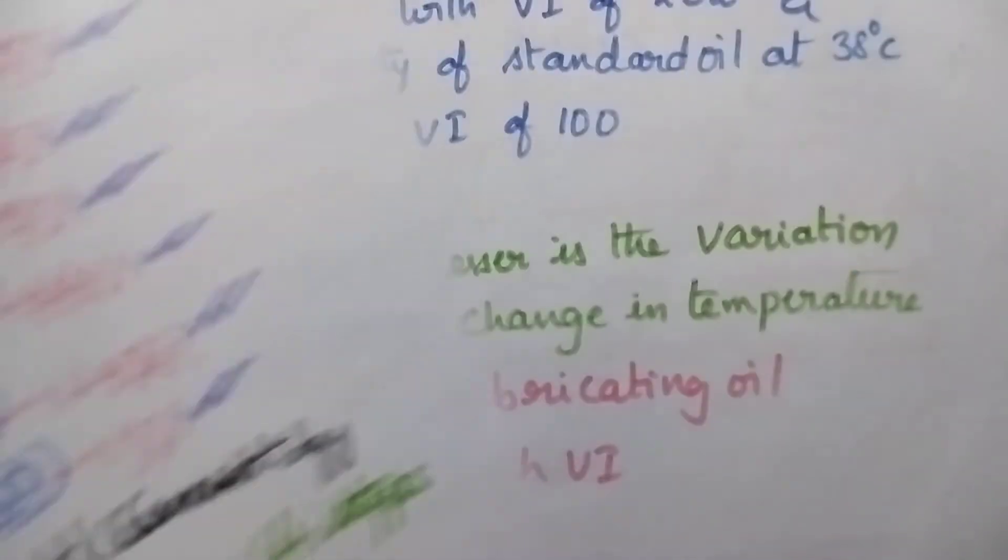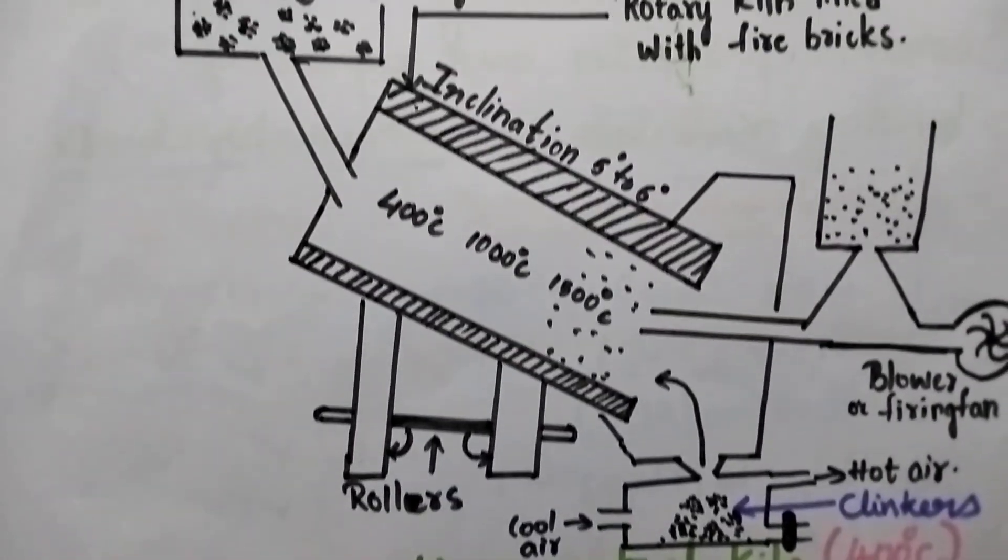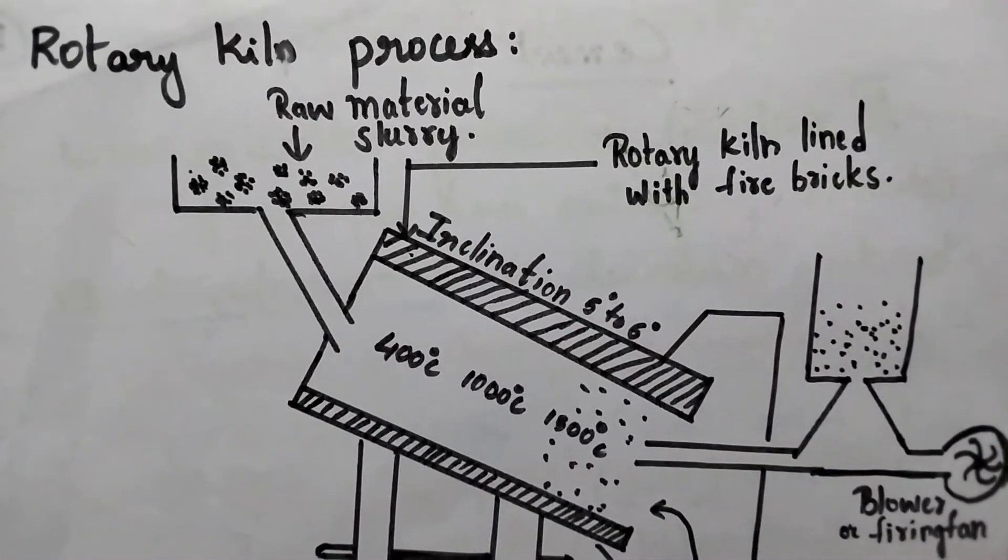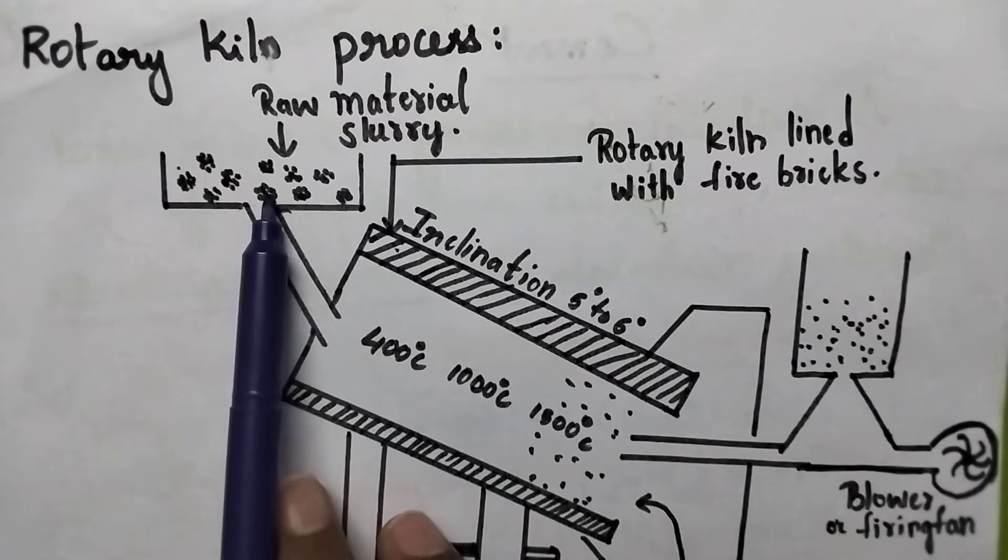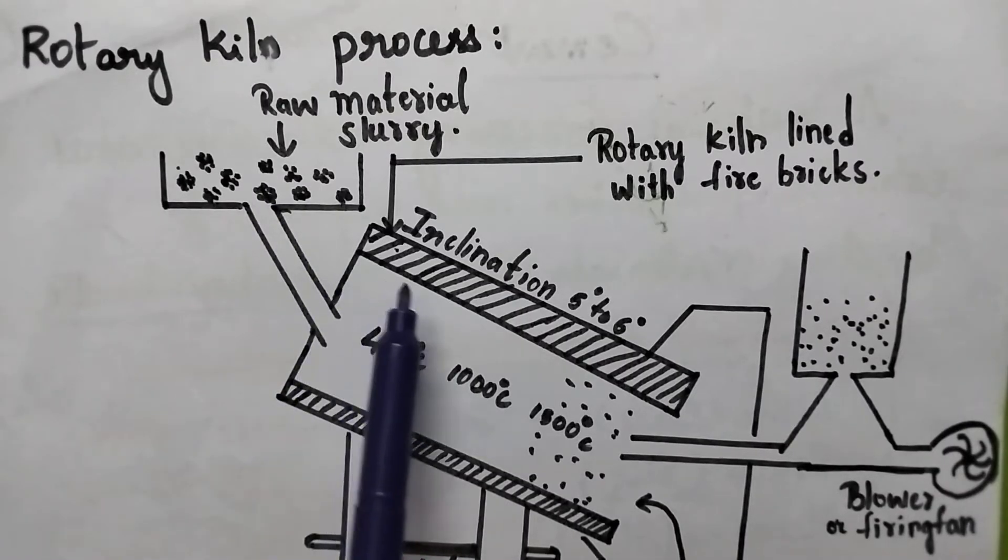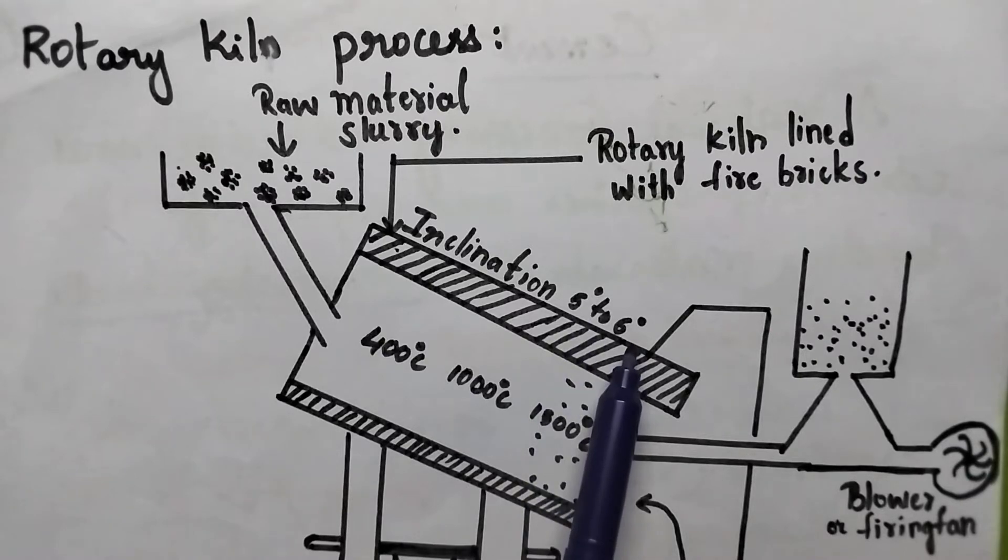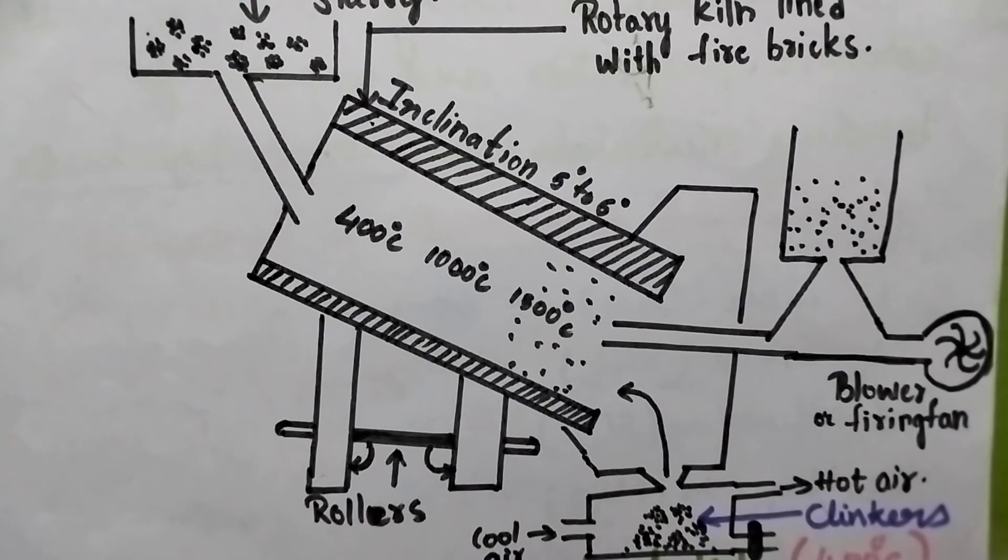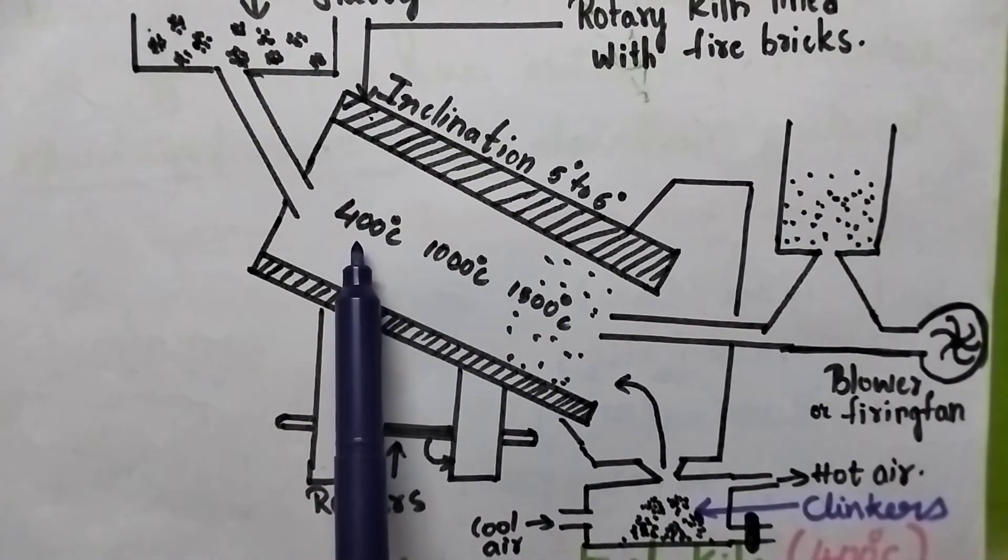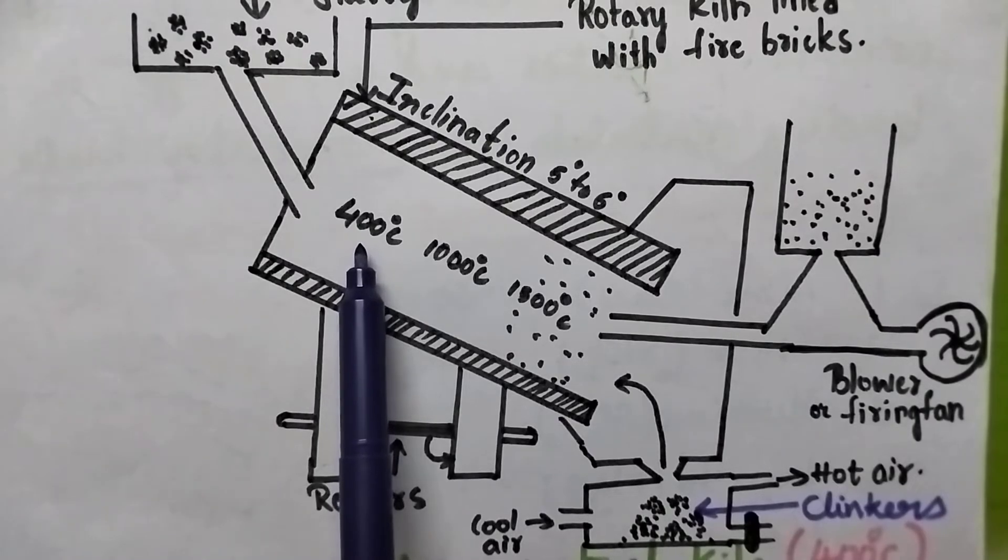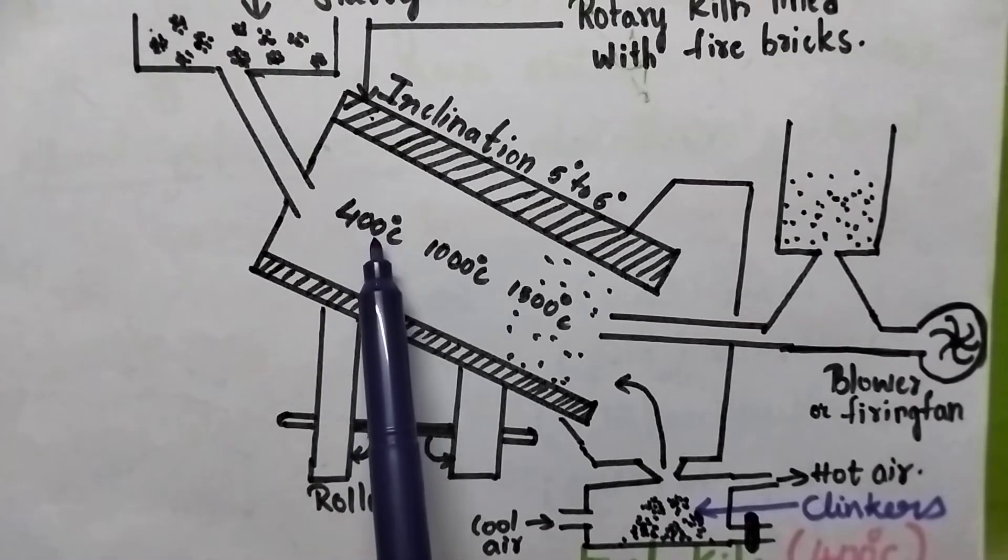Coming to the second step, which is the burning of the raw materials, this is done using Rotary Kiln. Initially, the raw material is introduced into the Rotary Kiln, which is inclined at about 5 to 6 degrees. This Rotary Kiln can be divided into three important zones. First one is the drying zone, the upper zone where 400 degrees centigrade is maintained.